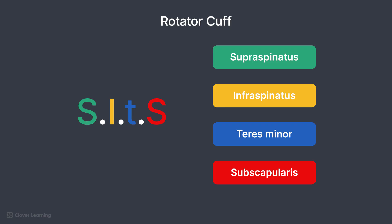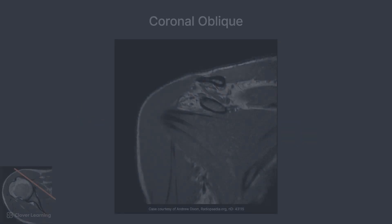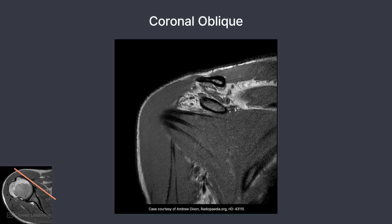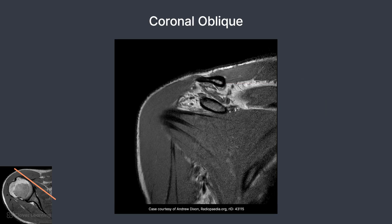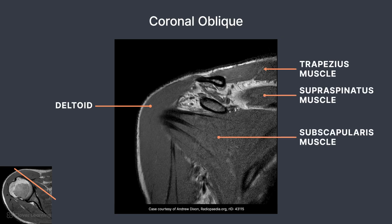Let's take a look at the anatomy on some MRI images starting with the coronal oblique plane. Starting at an anterior slice, important bony structures include the clavicle, located superiorly, and the coracoid process, demonstrated more inferiorly. There are several important muscles seen on this slice, including the deltoid on the lateral aspect of the shoulder. Other muscles from superior to inferior include the trapezius, supraspinatus, and subscapularis. A portion of the subscapularis tendon can also be identified, as tendons always appear as dark or black structures.